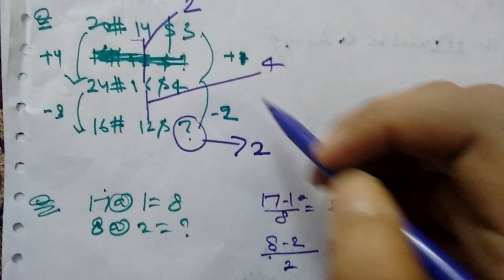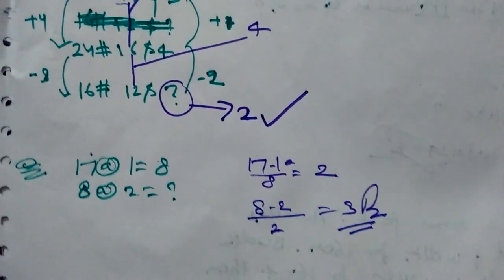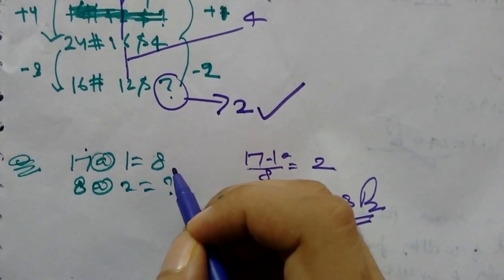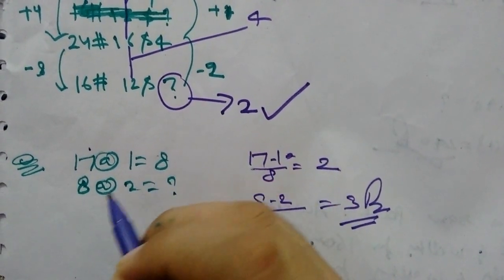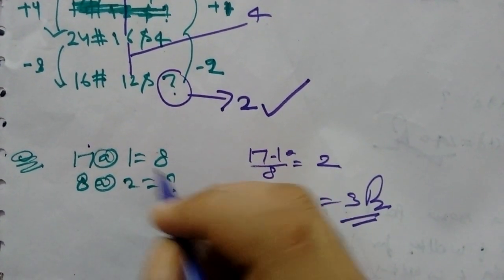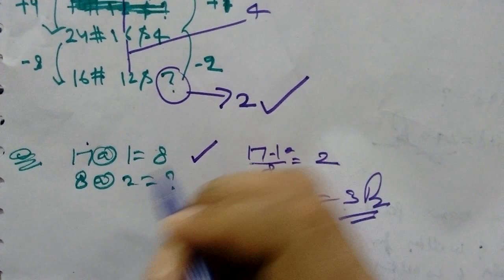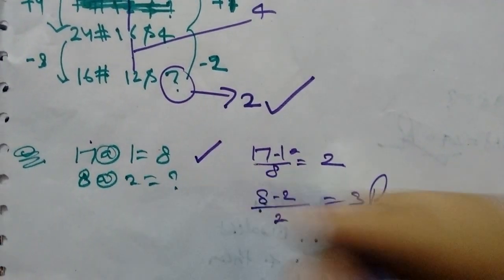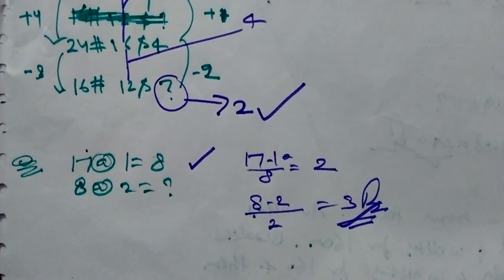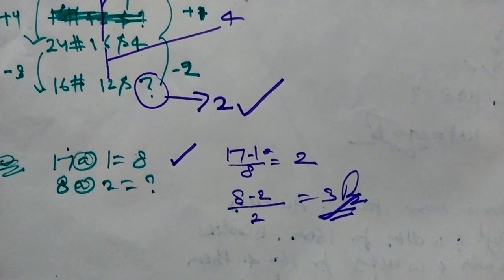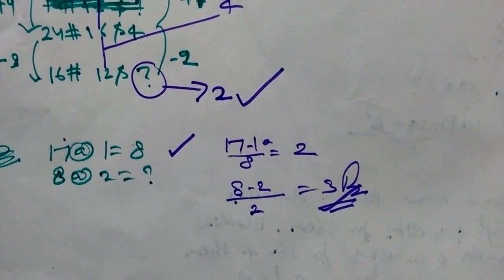17 at the rate 1 equal to 8. 8 at the rate 2 equal to question mark. Minus 17 minus 1 divided by 2 that will give you 8. 8 minus 2 divided by 2 will give you 3 answer.